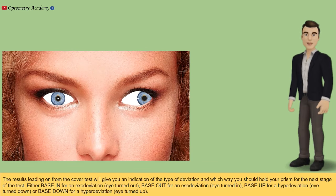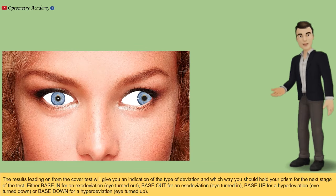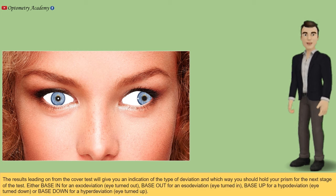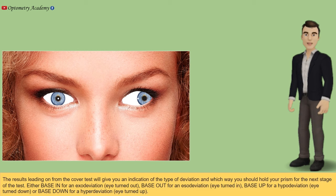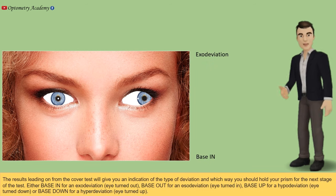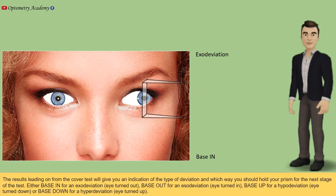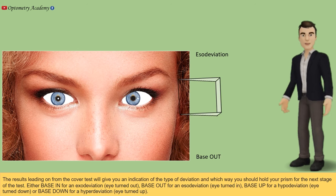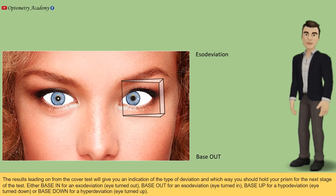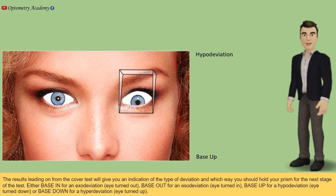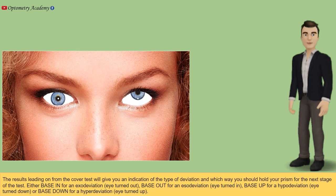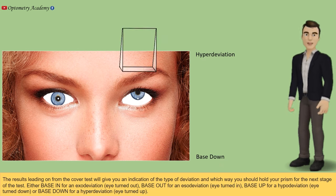The results from the cover test will give you an indication of the type of deviation and which way you should hold your prism: base in for an exodeviation, base out for an esodeviation, base up for a hypodeviation, and base down for a hyperdeviation.